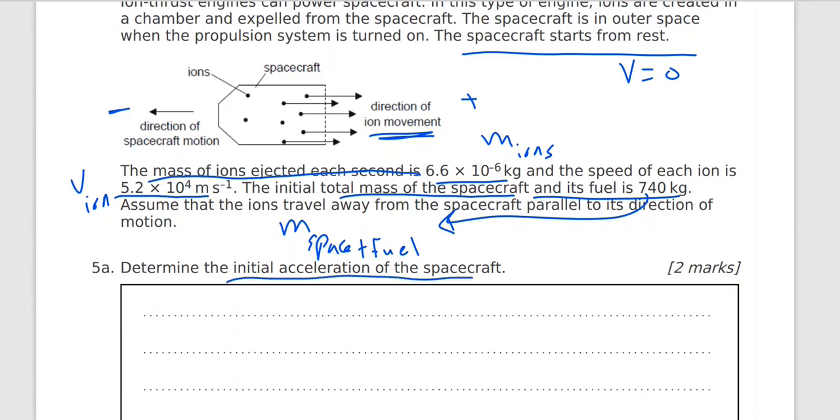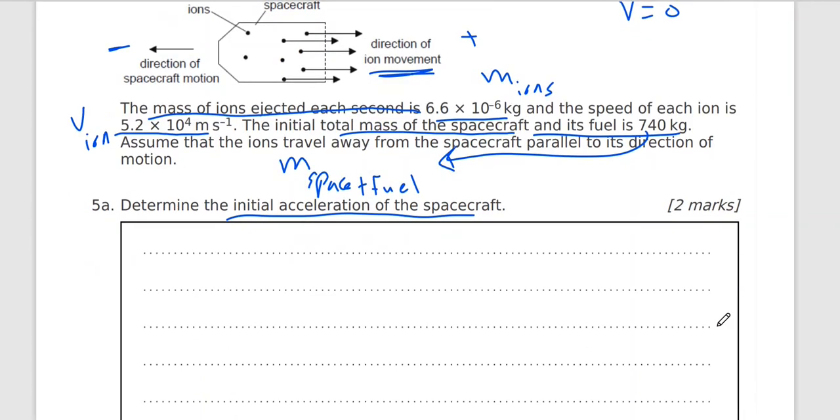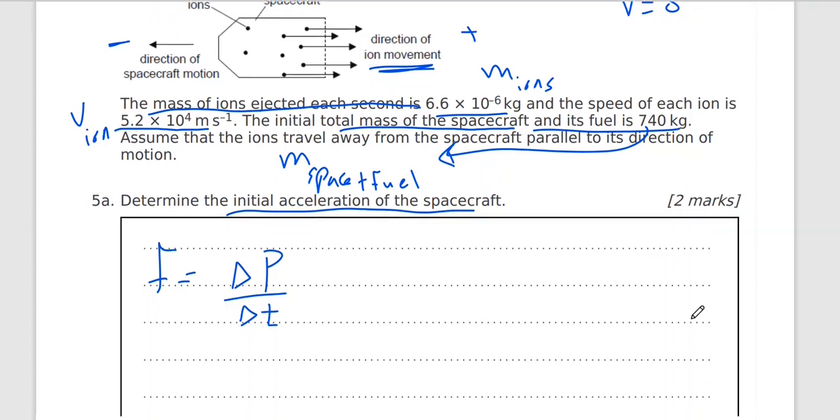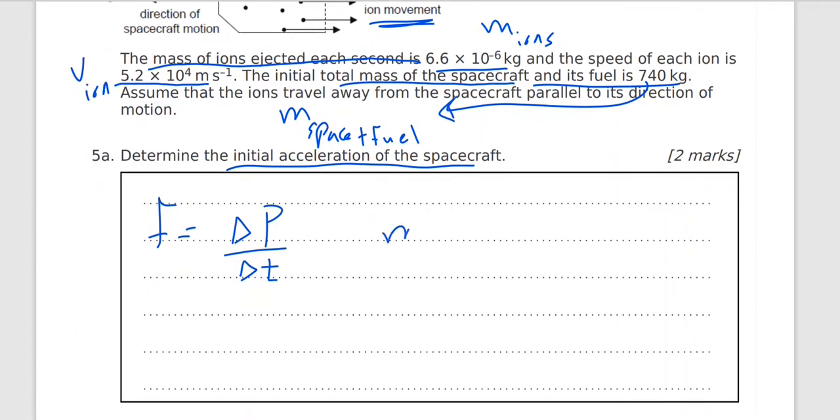Assume the ions travel away from the spacecraft parallel to its direction of motion. Determine the initial acceleration of the spacecraft. You can use Newton's second law. Newton's second law: force equals change in momentum with respect to change in time. Force is mass times acceleration equals change in momentum. Final momentum minus initial momentum. Time is 1 because each second. So time is 1.